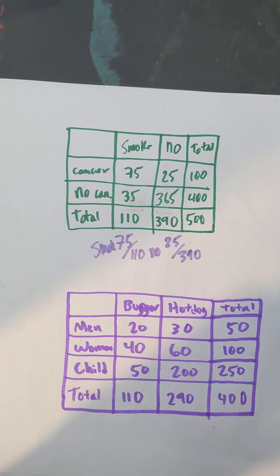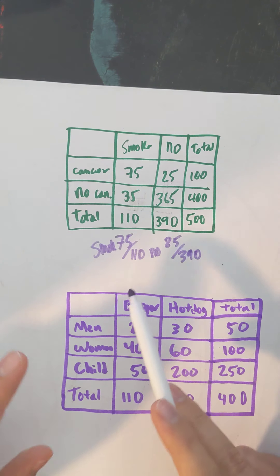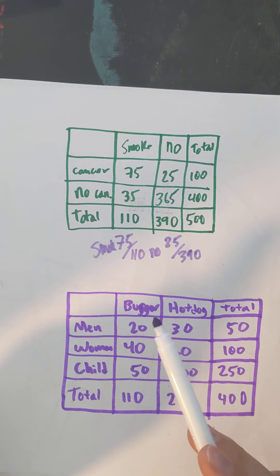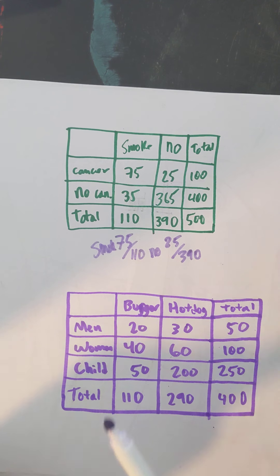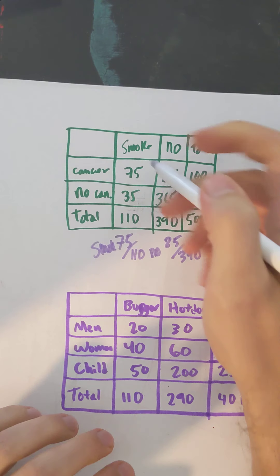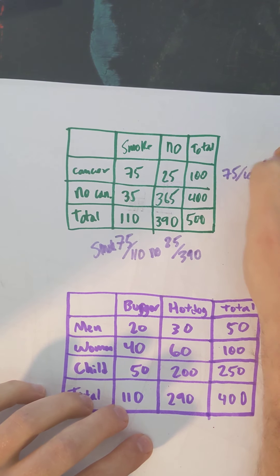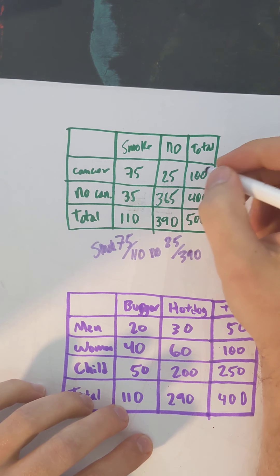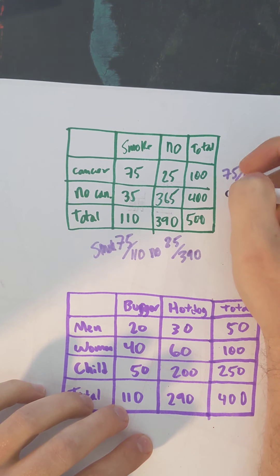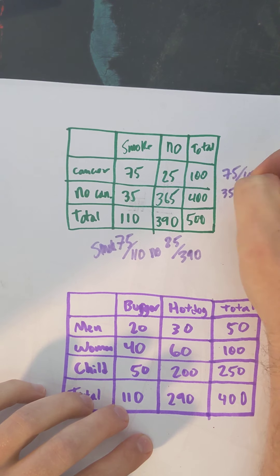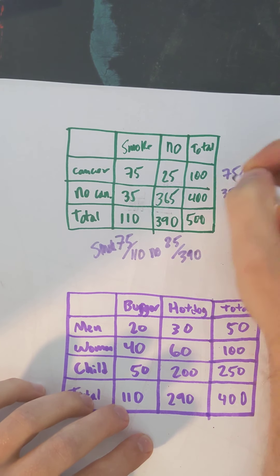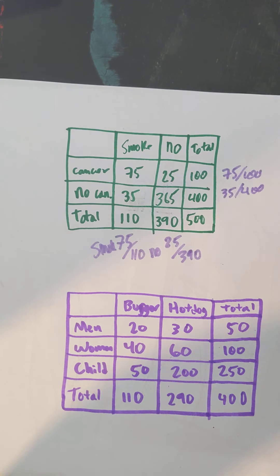So this would suggest that there's some kind of correlation between smoking and having cancer. Although some people might argue the other way and say, if we look at people who have cancer, 75 out of 100 chose to smoke, and people who don't have cancer, only 35 out of 400 chose to smoke — so cancer causes people to have the desire to smoke.